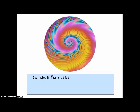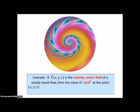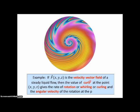Here's an example of curl. If F(x,y,z) is the velocity vector field of a steady liquid flow, then the value of curl F at the point (x, y, z) gives the rate of rotation — or whirling or curling — and the angular velocity of the rotation at that point. When you plug in a specific point, you get specific information as to what's going on at that point.